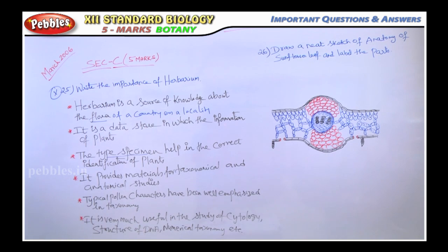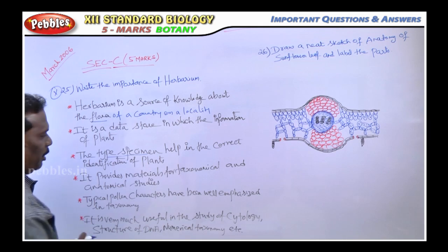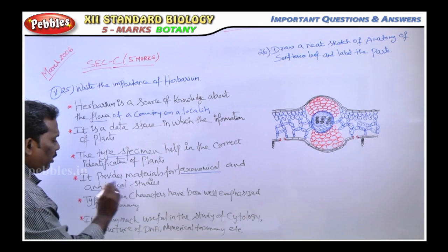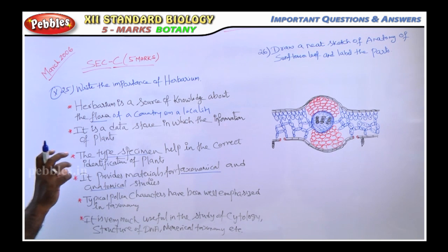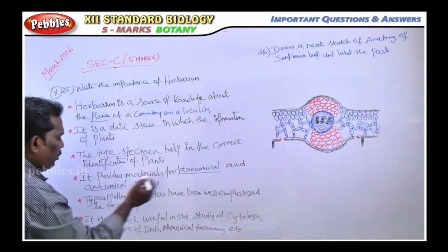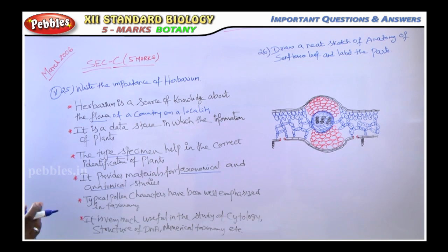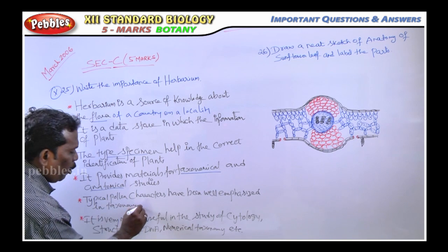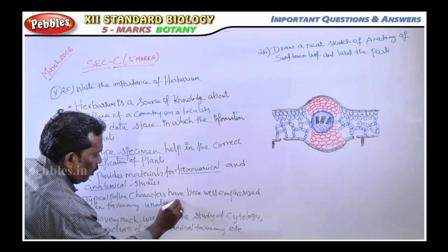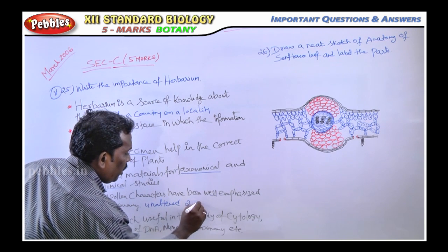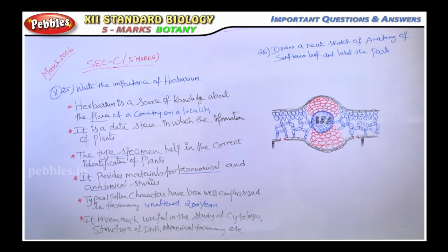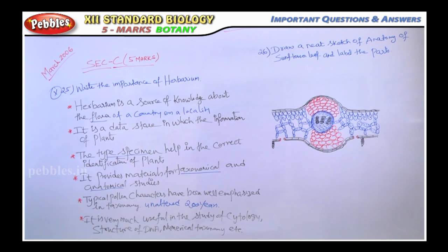The fourth point: it provides material for taxonomical and anatomical study. Taxonomy means classification; anatomical means studying the internal arrangement and structure of cells. The typical pollen characters have been well emphasized in taxonomy because the pollen characters remain unaltered even after 200 years.